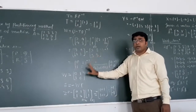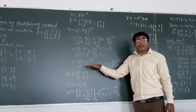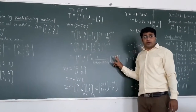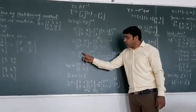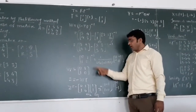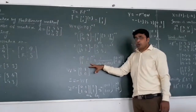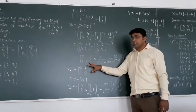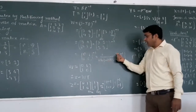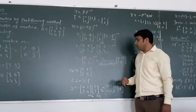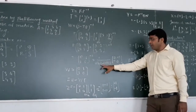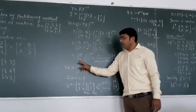Now we find the inverse of W, which is the 2 by 2 matrix [0, 1; 1, 0]. Using the adjoint method, the determinant is 0×0 − 1×1 = −1. For the adjoint, we interchange the diagonal elements and change the sign of the off-diagonal elements to get [0, −1; −1, 0]. Multiplying by 1 over the determinant (−1) gives W inverse as [0, 1; 1, 0].